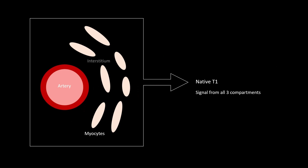The same compartment model is shown again: intravascular, interstitial, and intracellular. The signal for native T1 comes from all compartments — it does not differentiate between them, which is why it is more sensitive but less specific.